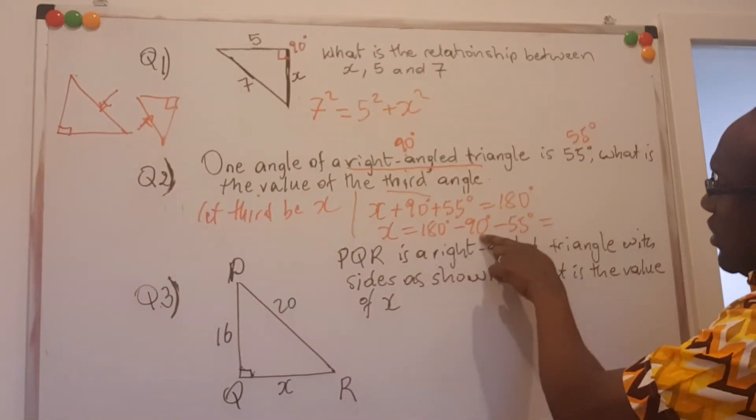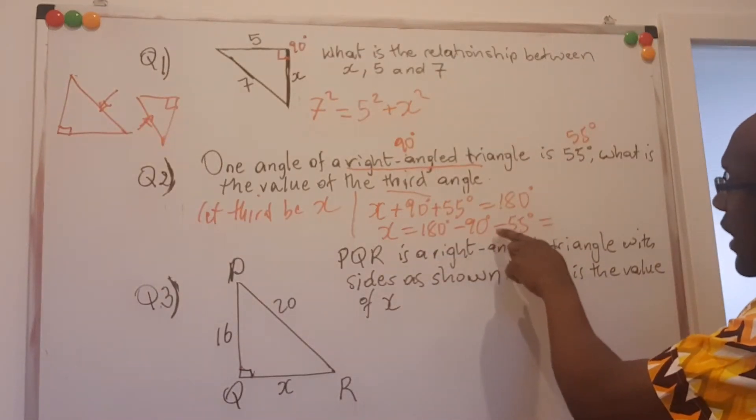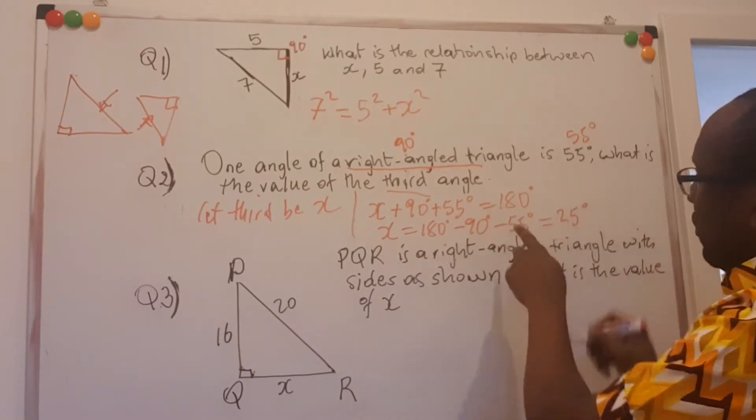180 minus 90 is 90. 90 minus 55 is 35 degrees.